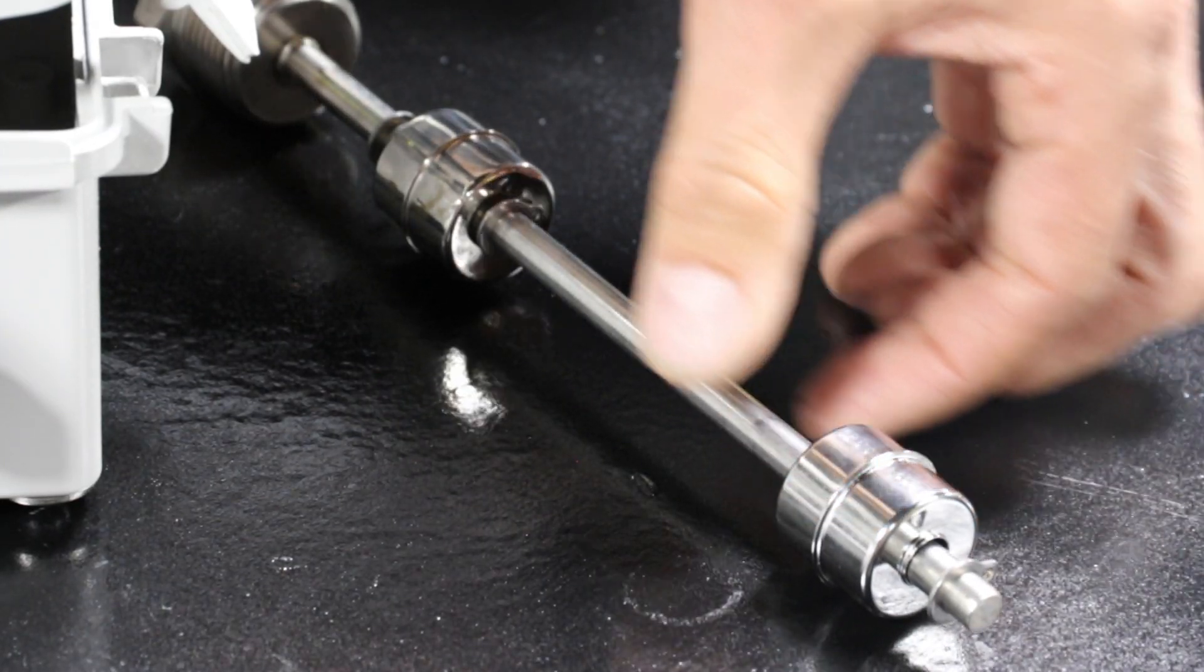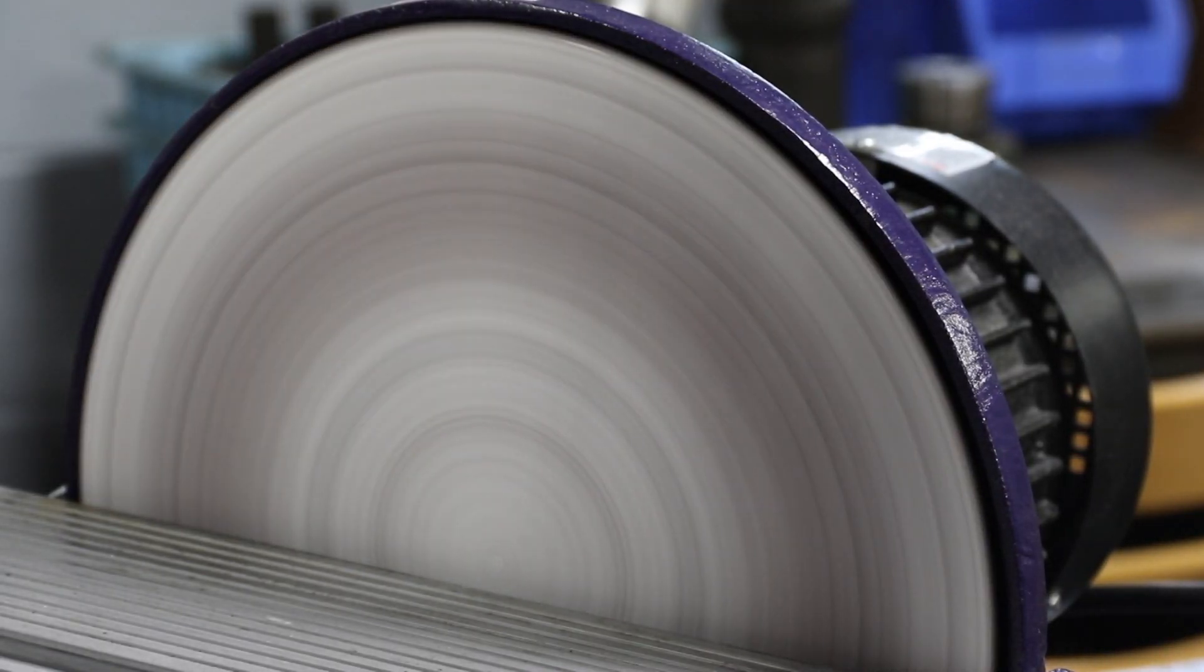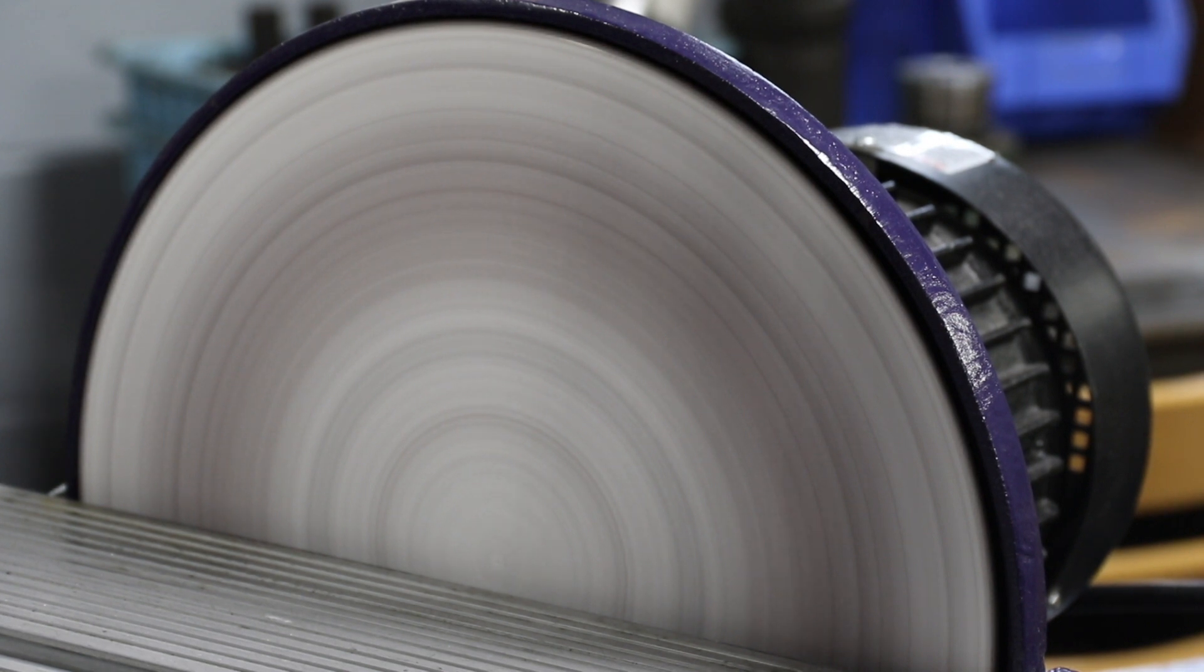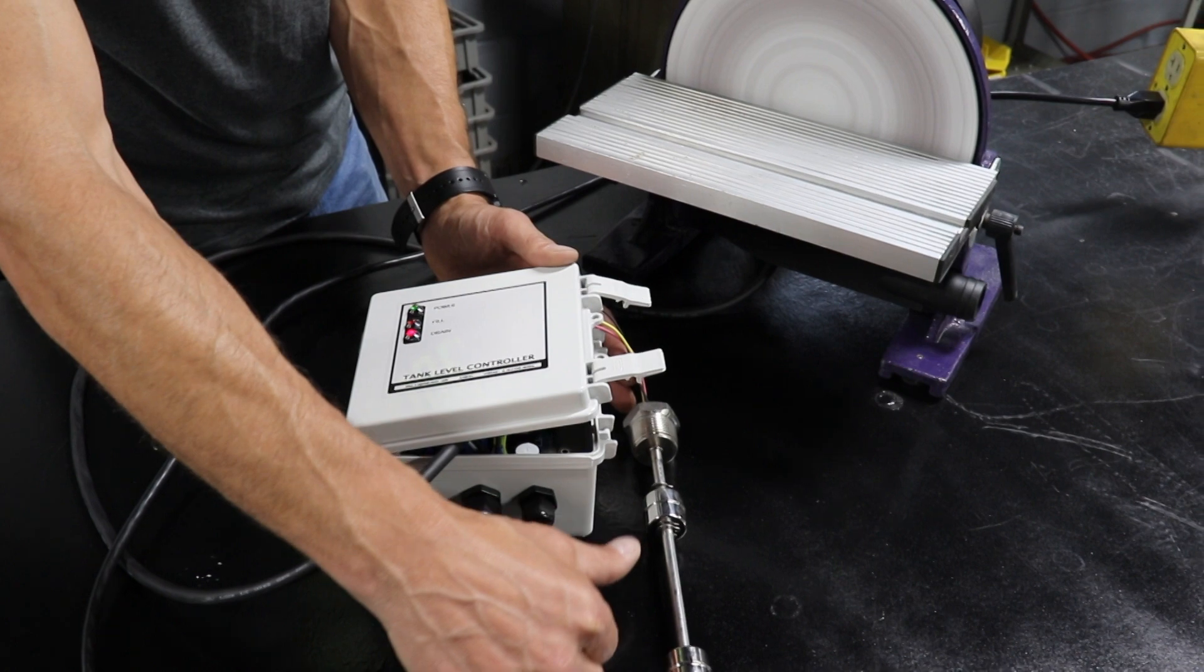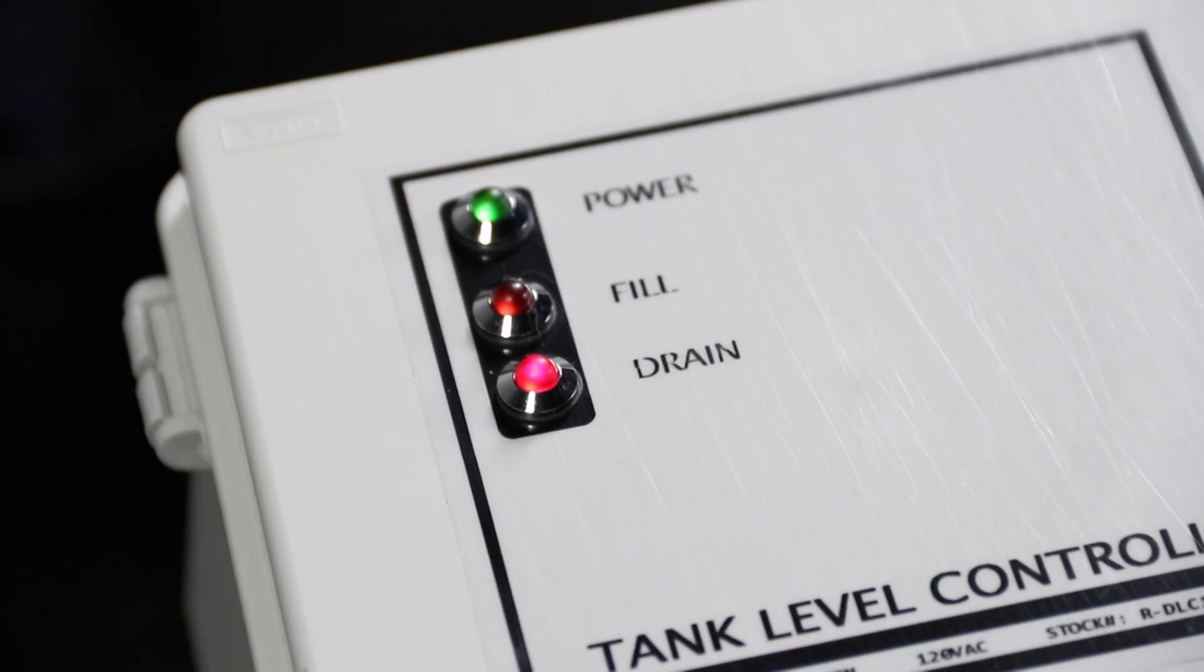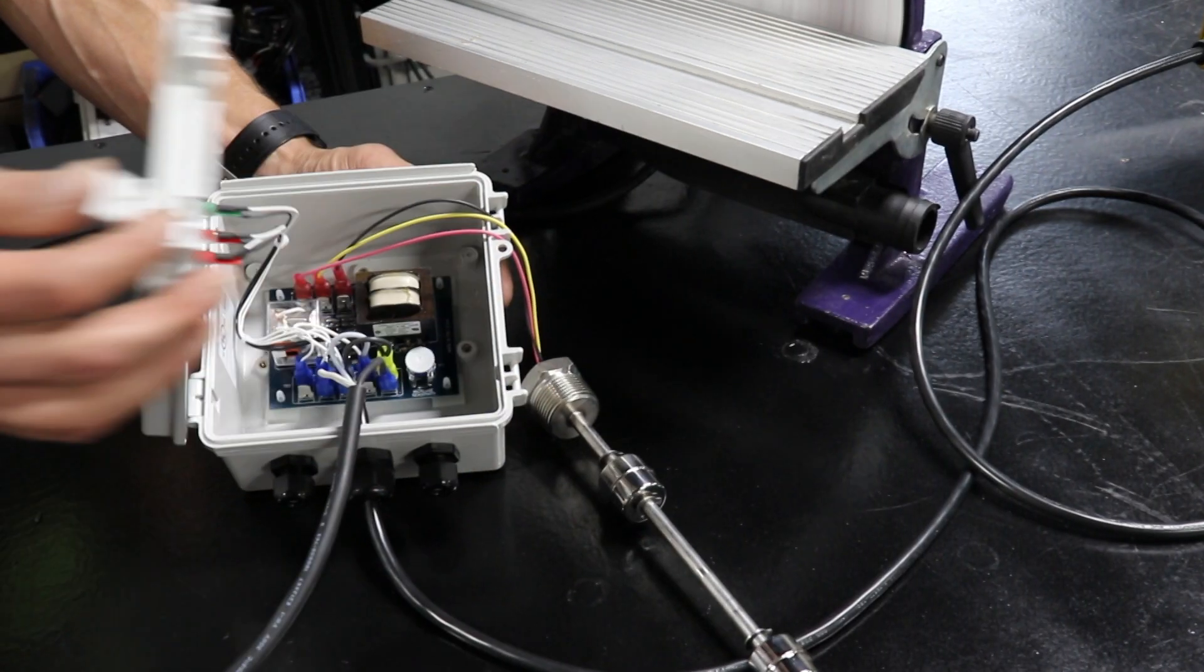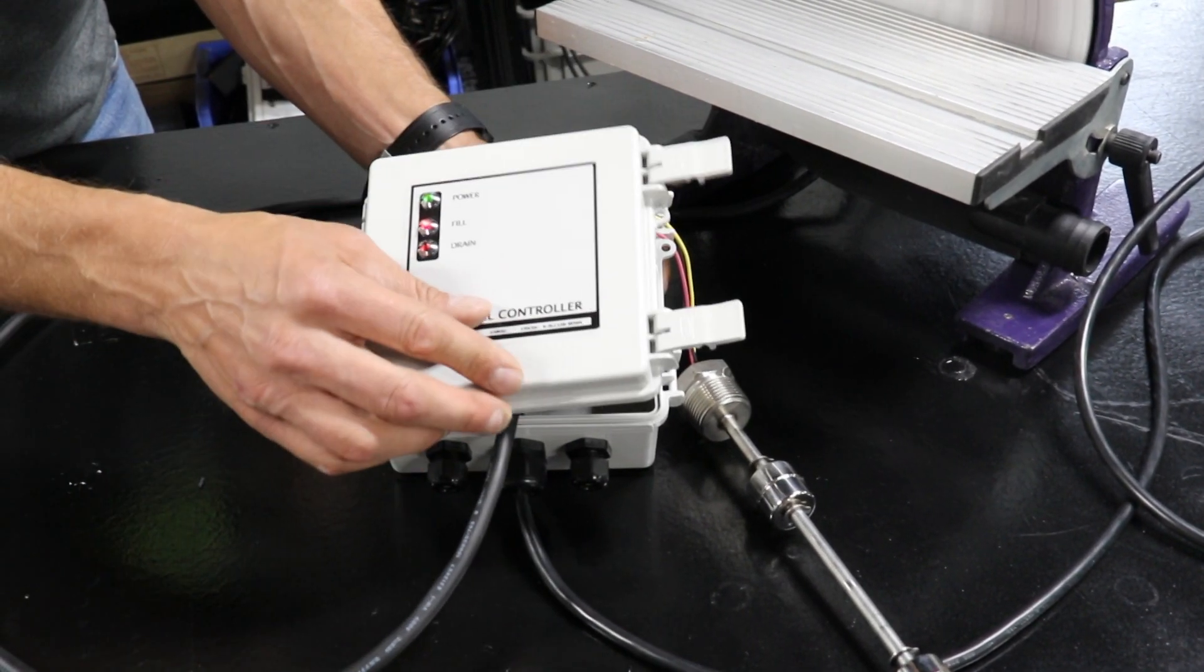When the low float rises nothing happens but when the high float rises the pump turns on and our tank would begin to drain. As the tank drains the high float drops and then the low float drops signaling the pump to turn off. And that's how you hook up a level switch to a tank level control relay.